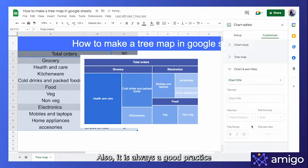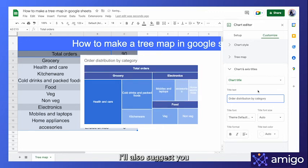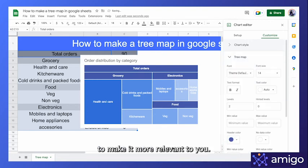Also, it is always a good practice to add a title to your chart to make sure the context is specified for the stakeholders or your peers who might refer to the data later on. I'll also suggest you try and familiarize yourself with the tree map chart editor to make it more relevant to you.